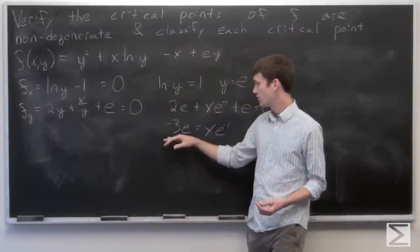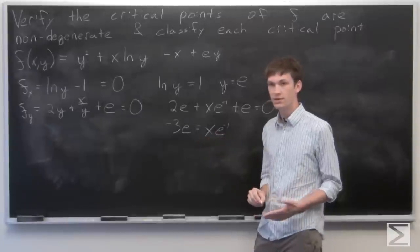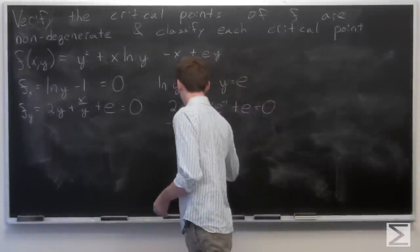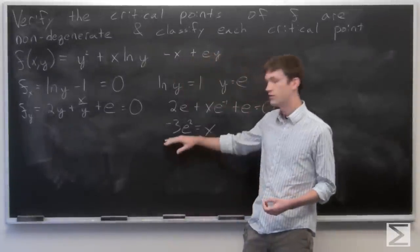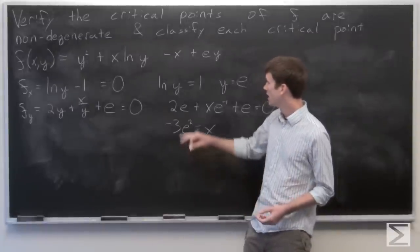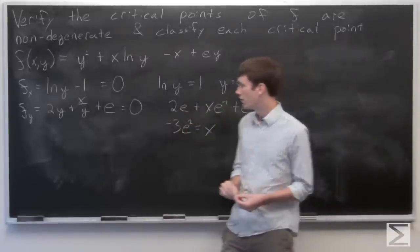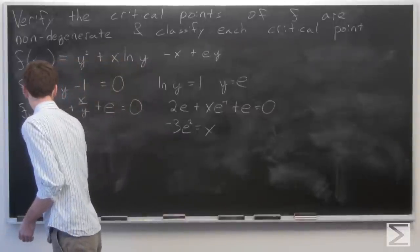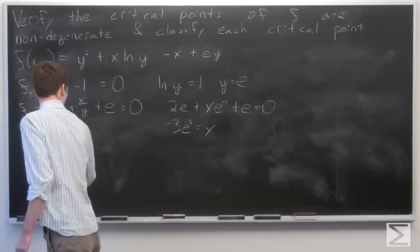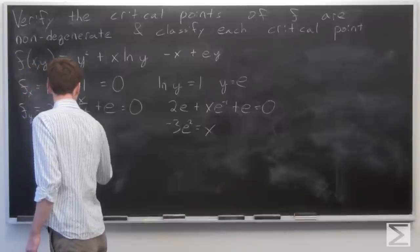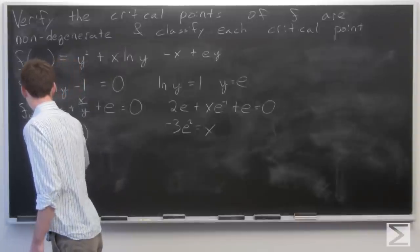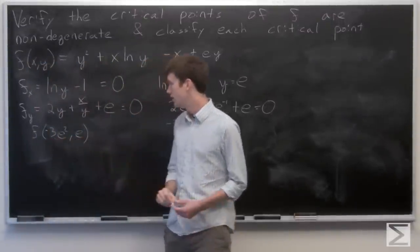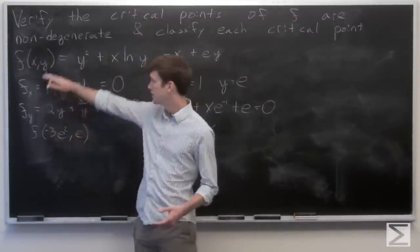Rearranging, negative 3e equals x times e to the negative one. Multiplying both sides by e, we get x equals negative 3e squared, and y was e. So we have one critical point where x equals negative 3e squared and y equals e.